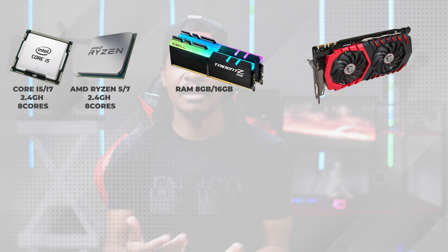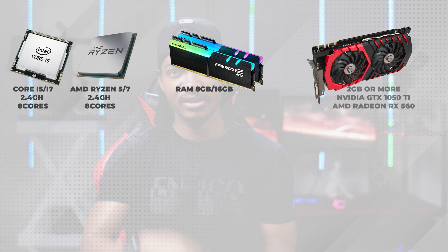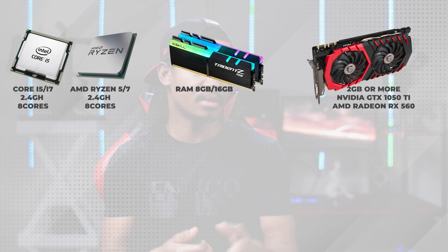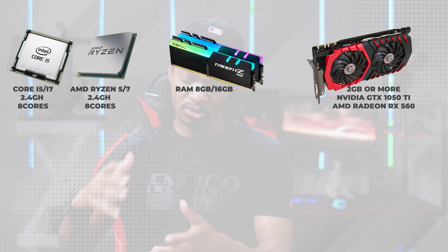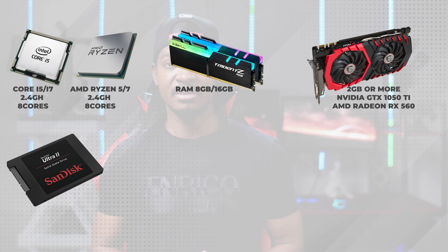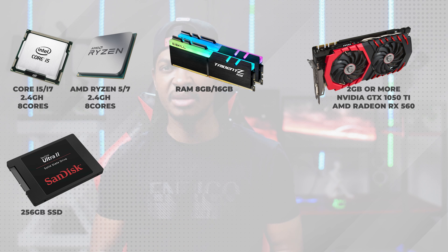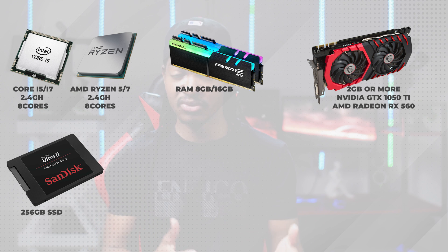A dedicated graphics card can help with encoding and streaming. An NVIDIA GTX 1050 Ti or AMD Radeon RX 560 are good starting points. For storage, a solid state drive is recommended for faster load times and smoother performance. A 250 GB SSD should be enough for basic live streaming.